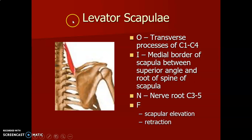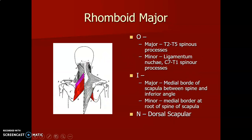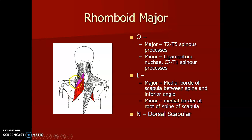Rhomboid major originates from T2 to T5 spinous processes, while rhomboid minor originates from the ligamentum nuchae up to C7 and T1 spinous processes. Rhomboid major inserts on the medial border of the scapula between the spine and inferior border. Rhomboid minor inserts on the medial border at the root of the spine. Both rhomboids are innervated by the dorsal scapular nerve.